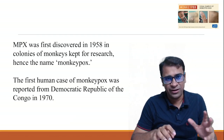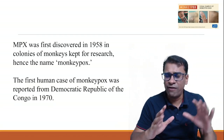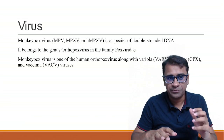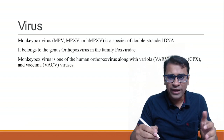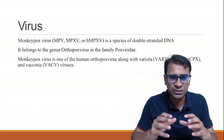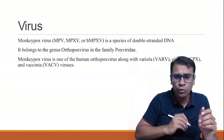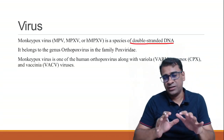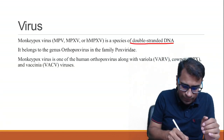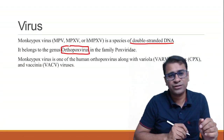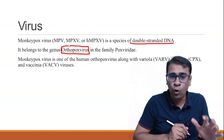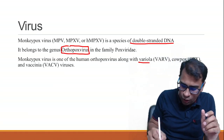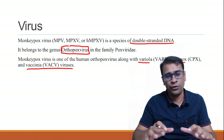The first human case of monkeypox was discovered in 1970 from the Democratic Republic of Congo — that means Africa. Monkeypox was a disease located to Africa only, but when it started spreading out of Africa, that is when we all got concerned. This virus belongs to a family called orthopoxvirus — it's a double-stranded DNA virus. It belongs to the orthopoxvirus family, which includes other viruses such as variola, cowpox, and vaccinia.